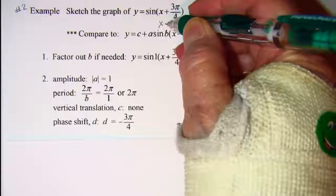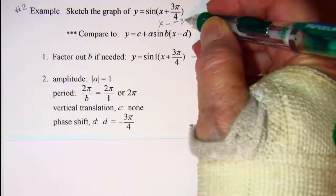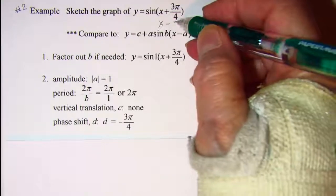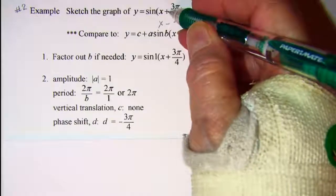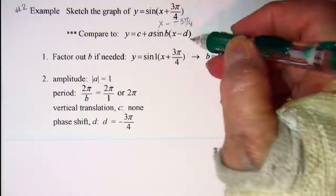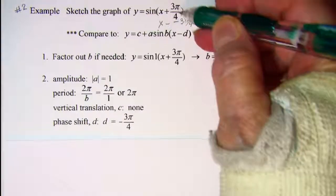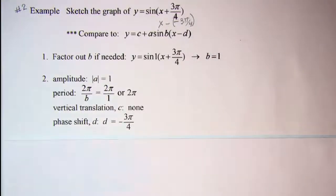The reason for that is we can write this as x subtract a negative 3 pi over 4, and so because it has a positive sign right here, the subtraction is in the general equation. So our phase shift has to be a negative 3 pi over 4.